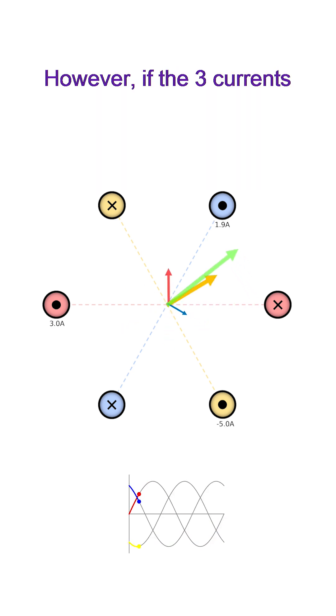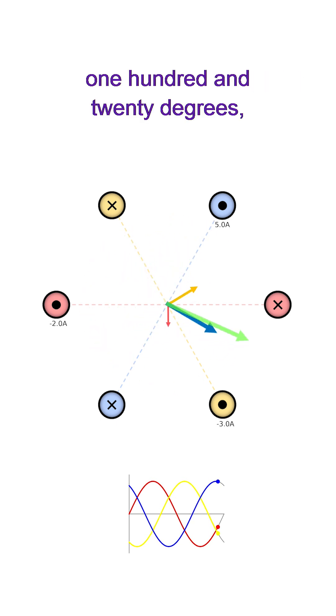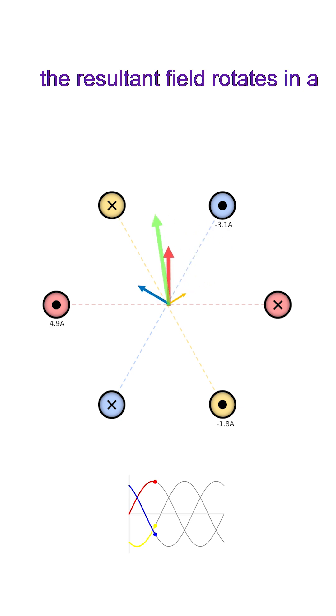However, if the three currents passing through these coils are also shifted by 120 degrees, the resultant field rotates in a circle at a uniform speed.